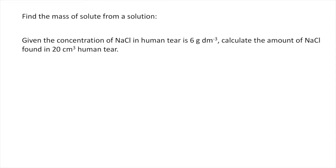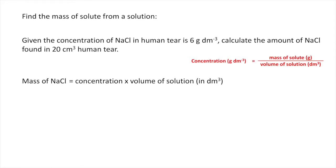In reverse, we can find the mass of solute from a solution. And here shows, we are given the concentration, 6g per dm cubed. And we try to find the mass of solute in 20 cm cubed of solution. And here, we can find the mass of solute by the concentration times the volume of solution in dm cubed. And we get the answer.